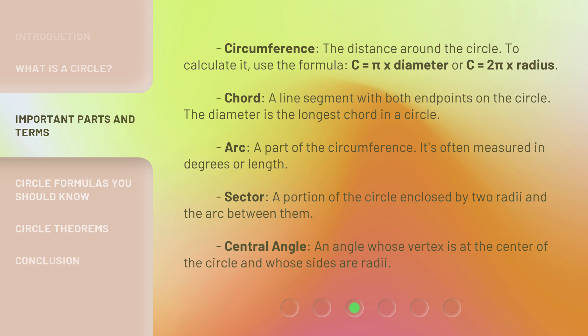Sector: a portion of the circle enclosed by two radii and the arc between them. Central angle: an angle whose vertex is at the center of the circle and whose sides are radii.